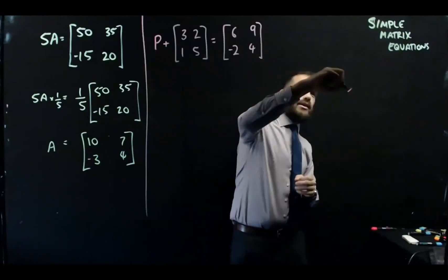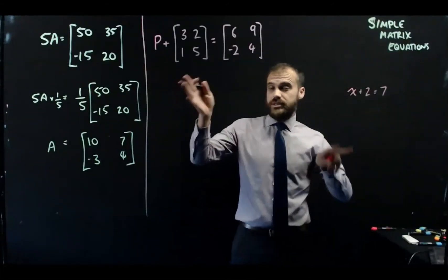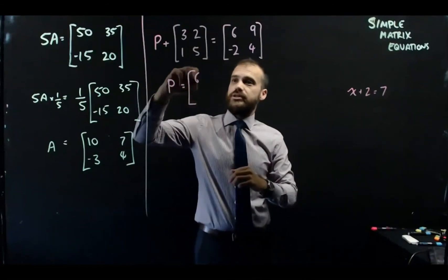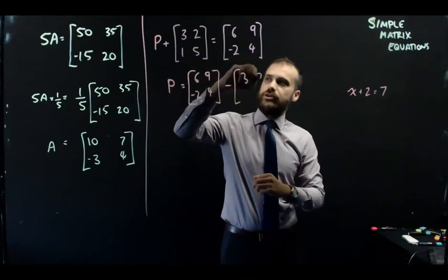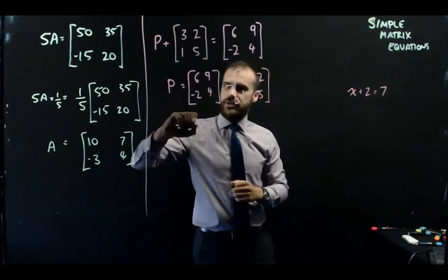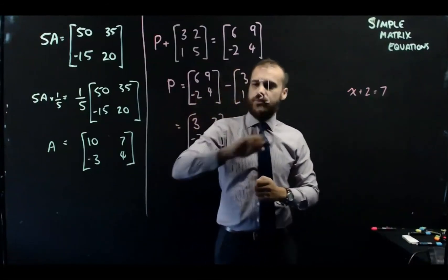Now, P plus that matrix equals that matrix. That's the same as doing like a one-step equation. X plus 2 equals 7. So we just do one matrix minus the other matrix. We're just moving it across the equals sign, if you like.